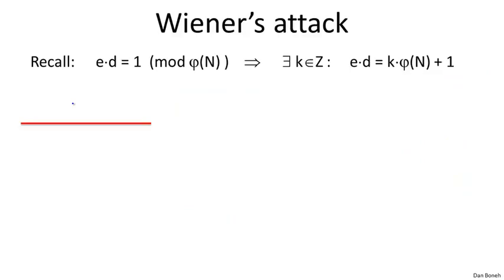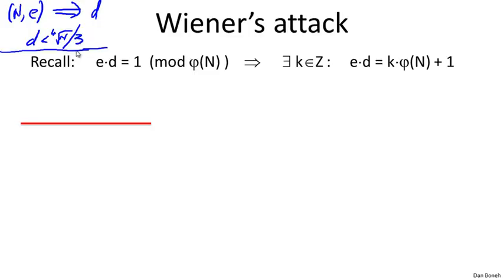I wasn't going to cover the details of Wiener's attack, but given the discussions in the class, I think some of you would enjoy seeing the details — it just involves manipulating some inequalities. In Wiener's attack, we're given the modulus and the RSA exponent N and E, and our goal is to recover the private exponent d, knowing only that d is less than the fourth root of N — specifically less than the fourth root of N divided by 3. First, recall that because E and D are RSA public and private exponents, E times D equals 1 modulo φ(n), meaning there exists some integer K such that E times D equals K times φ(n) plus 1.